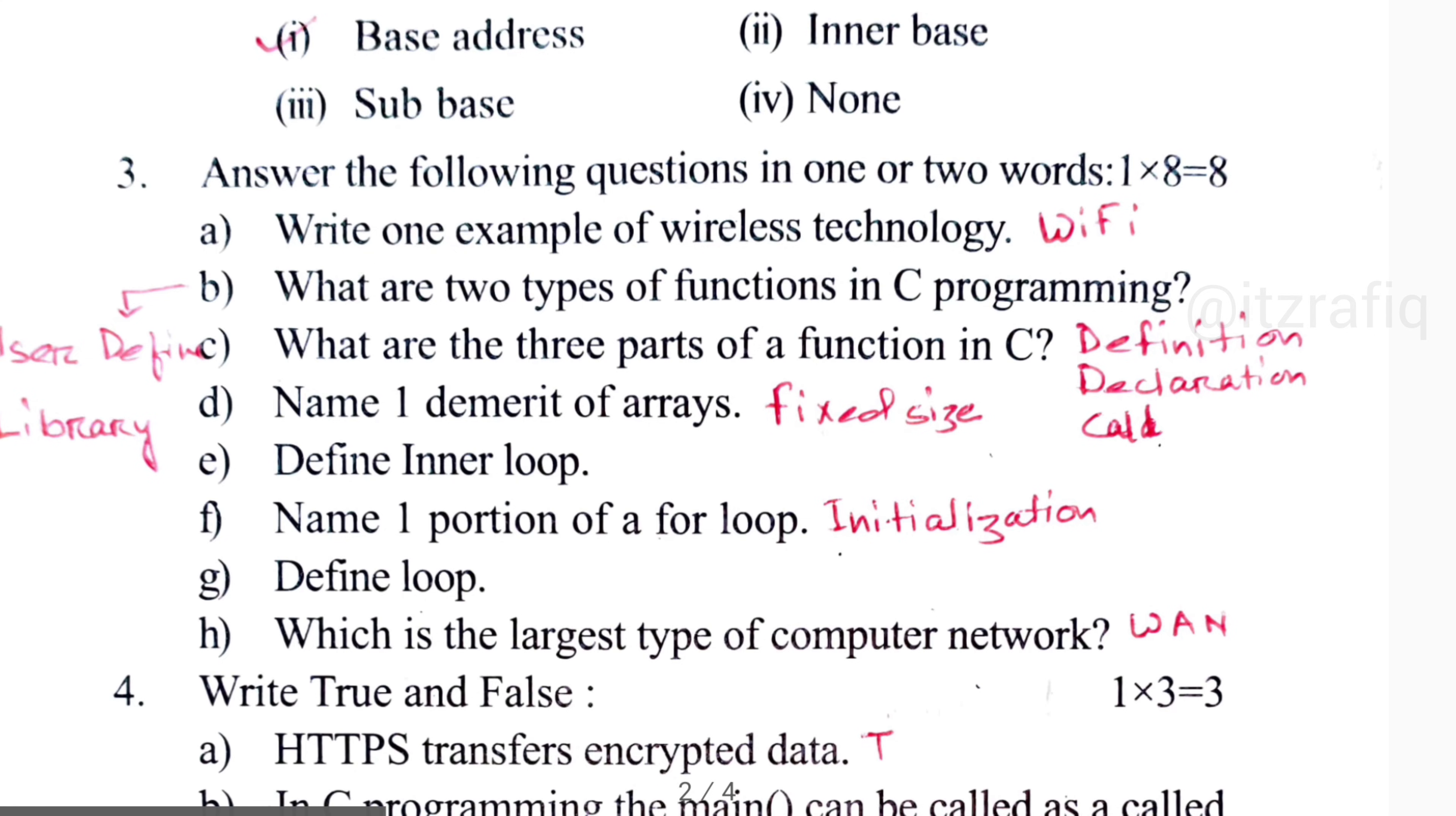Name one demerit of array: it is fixed size. Define inner loop: the loop which is written inside another loop is known as inner loop, or you can write also like this way - the loop which is written inside the first loop.